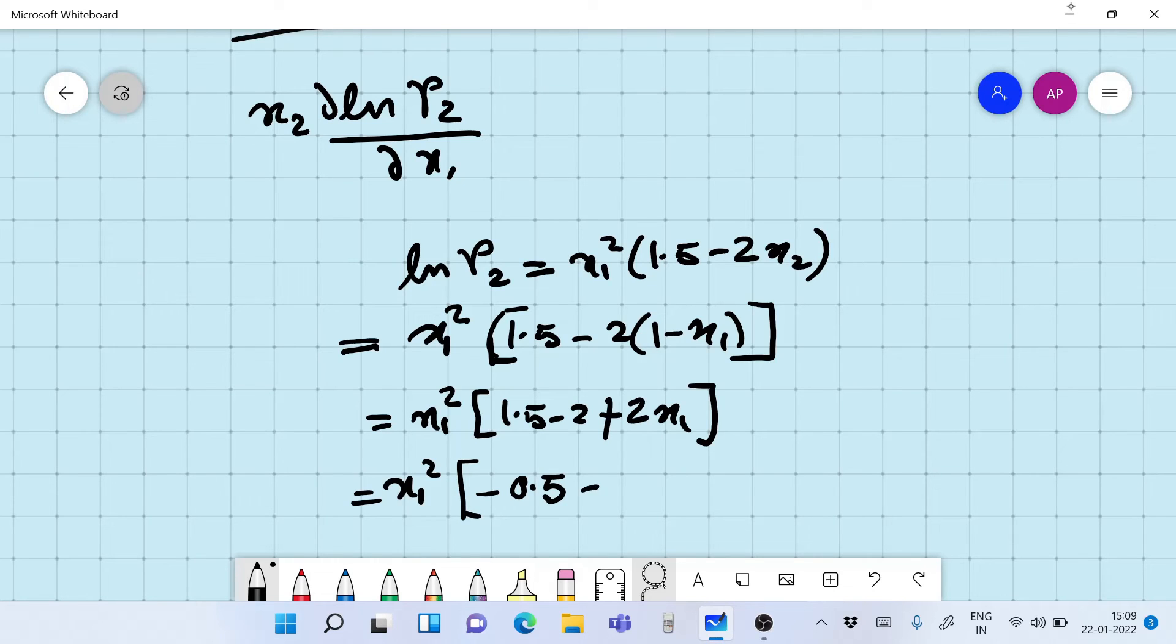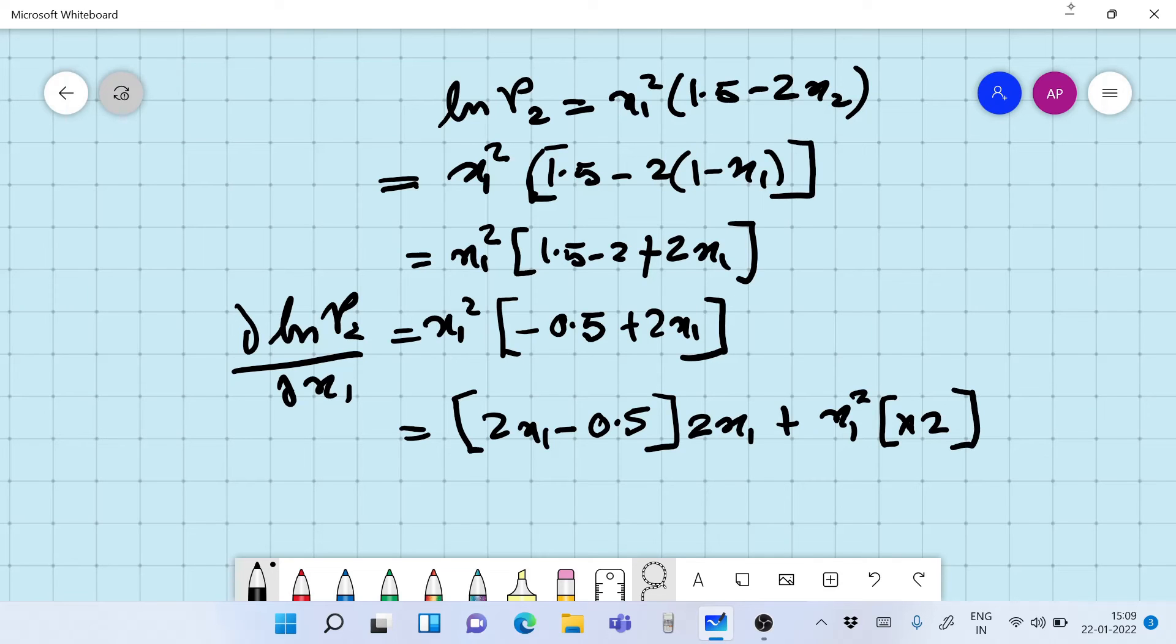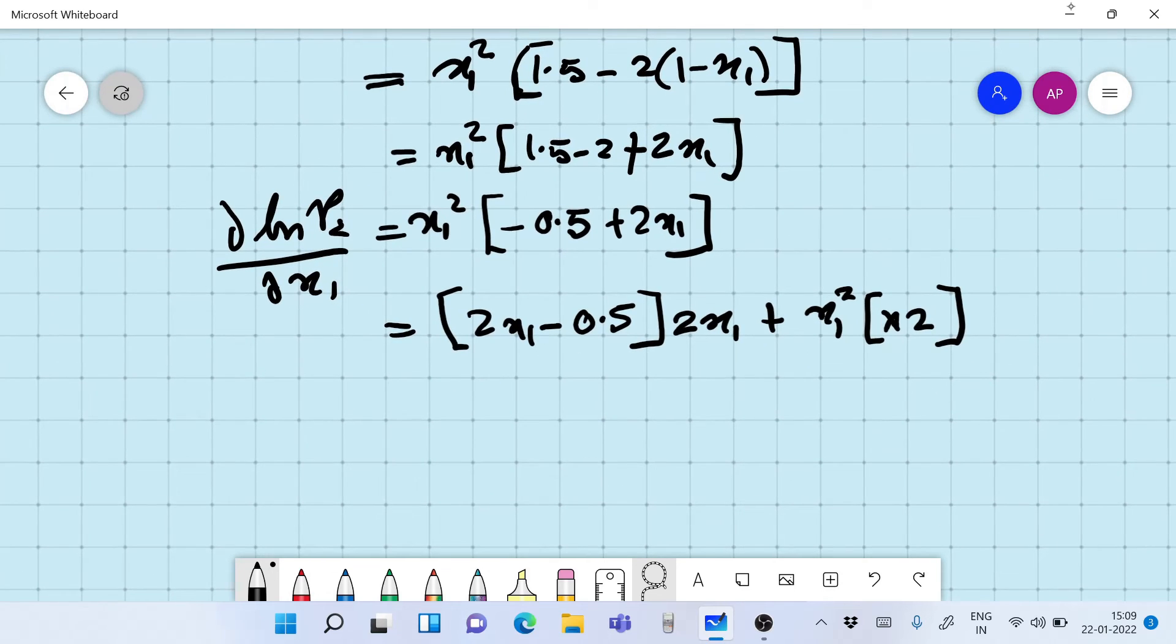This is going to be equal to x1 square into 1.5 minus 2 into x2, which is 1 minus x1, right? So we get this as x1 square times 1.5 minus 2 plus 2x1. That's going to be equal to x1 square times minus 0.5 plus 2x1.